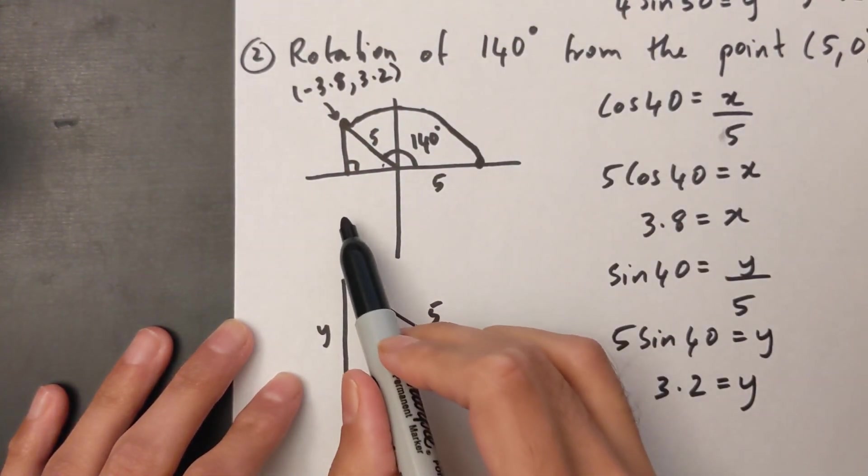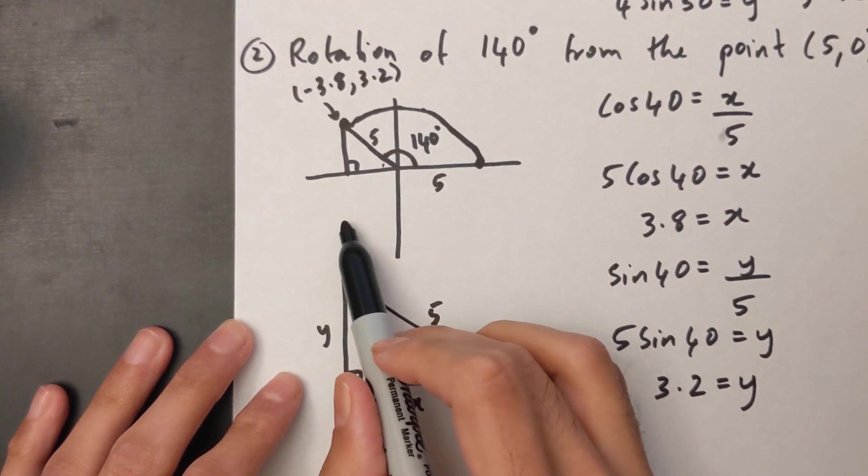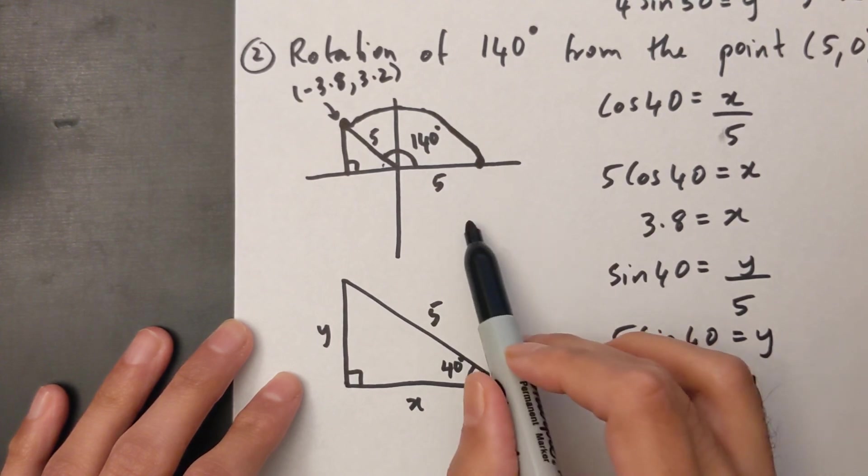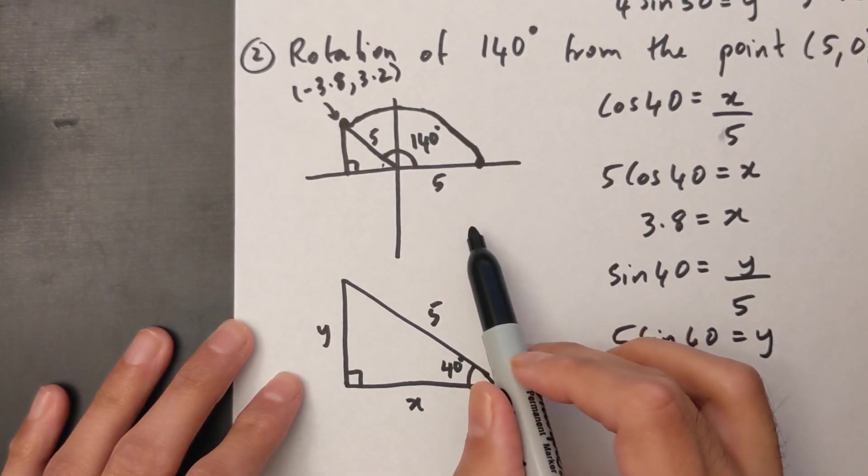If you are in this coordinate down here, both would be negative—your X and your Y. And if you're in this quadrant over here, your X would be positive and your Y would be negative.